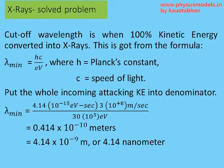So plug in the values. H is Planck's constant, that's 4.14 times 10 to the power minus 15 eV seconds. Speed of light is 3 times 10 to the power 8 meters per second. And the denominator is 30 times 10 to the power 3 eV. So E and E cancels in the numerator and denominator, and doing the math, you will get 4.14 nanometers.